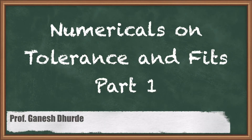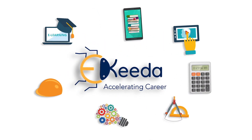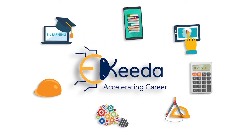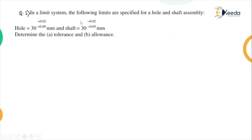Hello friends. In this lecture we will solve few numericals based on limits, fits and tolerances. The first numerical: in a limit system, following limits are specified for a hole and shaft assembly. The hole size is 30 +0.00/+0.02 and the shaft is 30 -0.05/-0.02 mm. Here we have to find out the tolerance and the allowance.